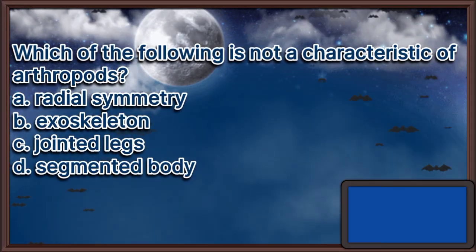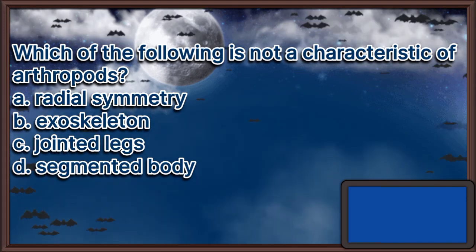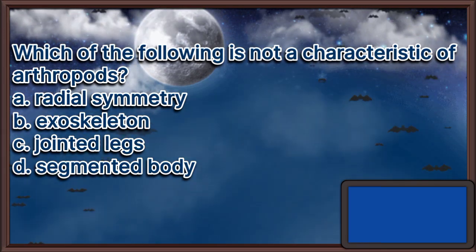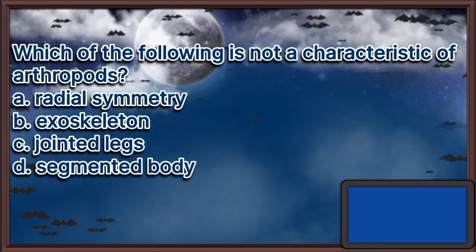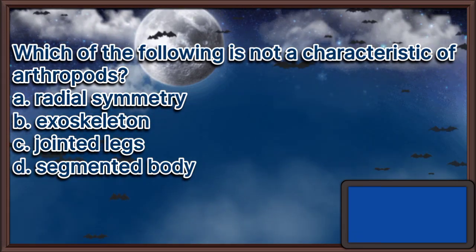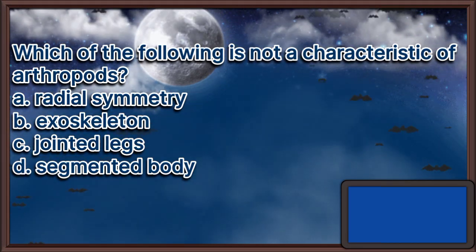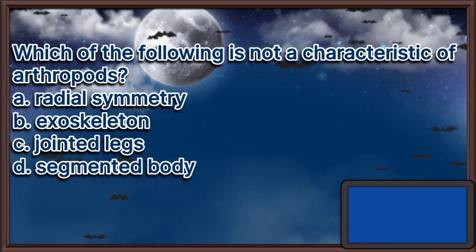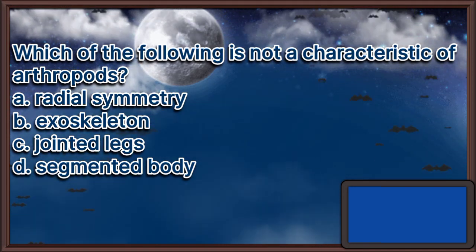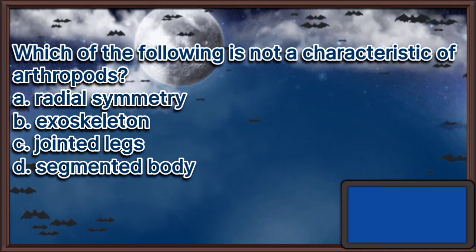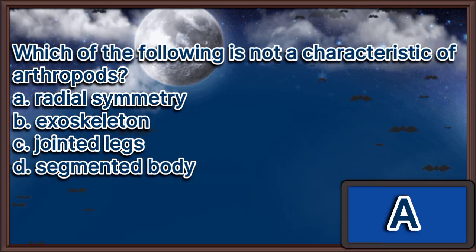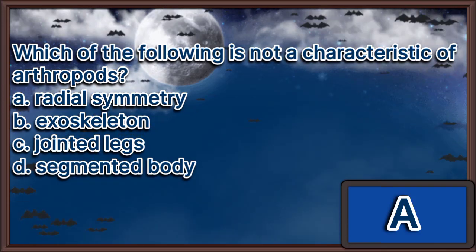Which of the following is not a characteristic of arthropods? A. Radial symmetry, B. Exoskeleton, C. Jointed legs, D. Segmented body. The answer is letter A.